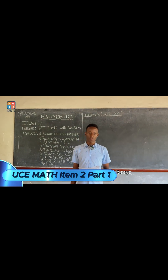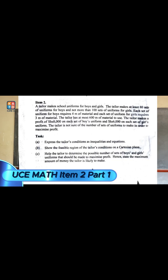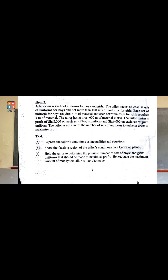Looking at item 2 of UNEB, the scenario says that a tailor makes school uniforms for boys and girls. The tailor makes at least 80 sets of uniforms for boys and not more than 100 sets of uniforms for girls. Each set of uniform for boys requires 4 meters of material and each set of uniform for girls requires 3 meters of material. The tailor has at most 600 meters of material to use.